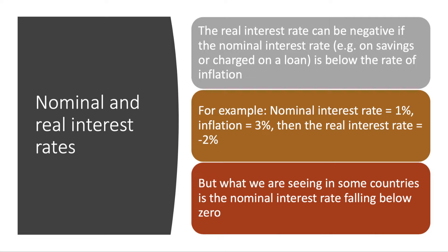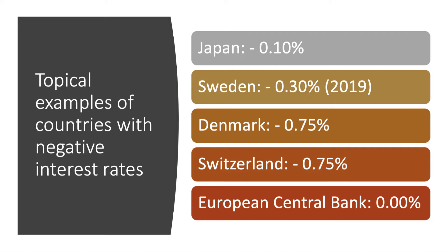What we're seeing in some countries is the nominal, or money rate of interest, falling below zero. In Europe and Japan, central banks in recent times have started to experiment with negative interest rates to stimulate their economies. Japan is a good example. Sweden has just finished a five-year experiment with negative rates. Denmark is at minus 0.75%, and Switzerland is similar.